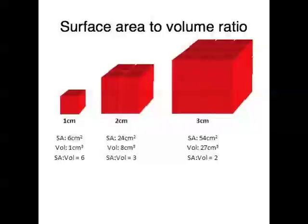One of the functions of the plasma membrane is to enable the cell to exchange material with its environment, and this also helps to explain why cells are so very small. Cells are small because smaller things have a higher surface area to volume ratio. A higher surface area to volume ratio means there's more surface in contact with the environment, and therefore the cell is able to exchange more materials more quickly. Small things have a very high surface area to volume ratio, and big things have a very low surface area to volume ratio.